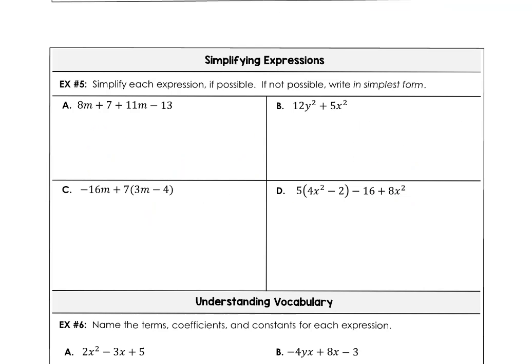Moving on to example 5, we want to simplify each expression, and if it's possible, but if it's not possible, we're going to write that it's already in simplest form. And looking at part A, we can combine 8m and 11m, they're both positive, so we're adding 8 plus 11, that's 19m, and then 7 minus 13 is going to give us negative 6. So 19m minus 6 would be our simplified form.